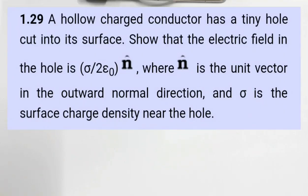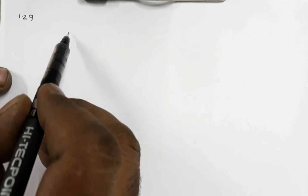In question 1.29, we have a hollow charged conductor with a tiny hole cut into its surface. We need to show that the electric field in the hole is σ/(2ε₀) n̂, where n̂ is a unit vector in the outward normal direction and σ is the surface charge density near the hole.